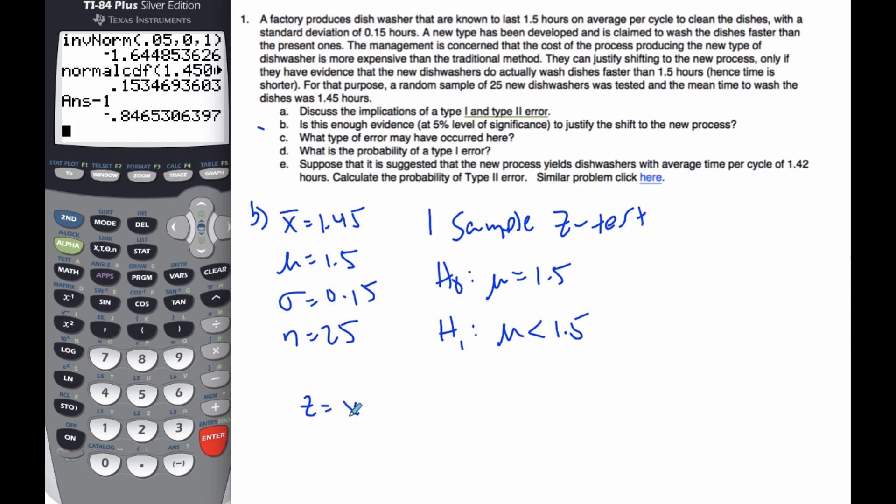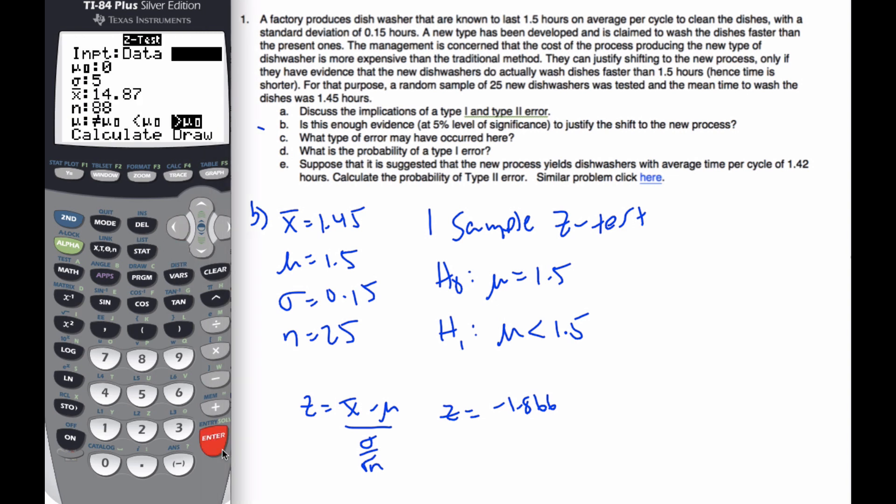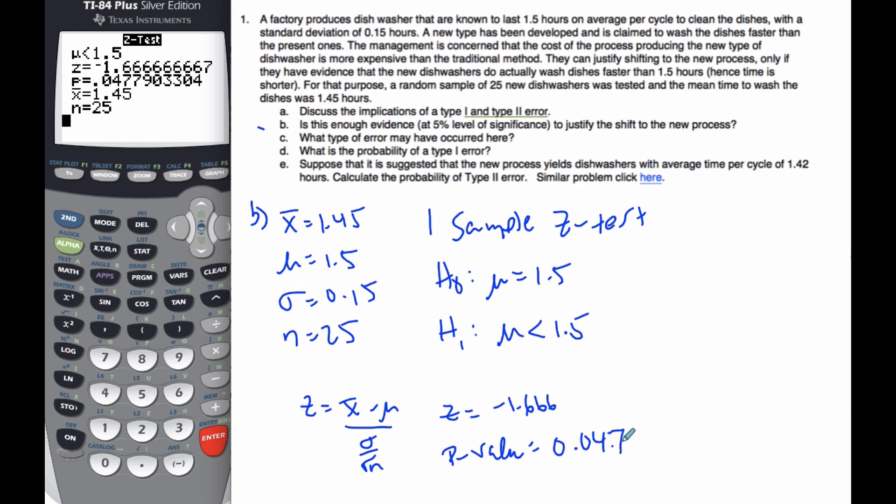I type it into my formula, X bar minus mu over sigma over root n. And when I do that, I get my z to B. And let's do our test, SAT test. It's a z test. I have statistics. My mean, my mu is 1.5. Standard deviation, 0.15. X bar, 1.45. N is 25. I want it to be less than mu. And so I'm going to calculate that. So z should be 1.666. And my p-value is equal to 0.0478.